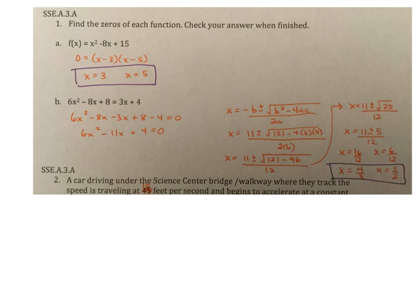All right, Unit 6 Study Guide, number one said find the zeros of each function, check your answer when finished. I didn't actually show my checking steps here, but A says f of x equals x squared minus 8x plus 15, so I set, I rearranged and said f of x was zero. I factored it because this was an easy problem to factor.